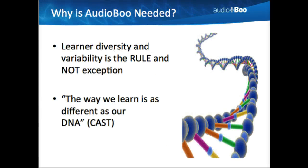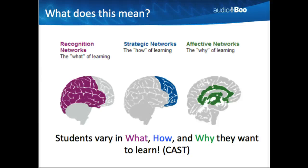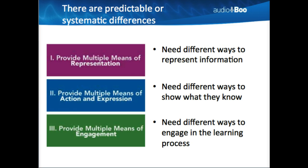So why exactly is Audioboo needed? Learner diversity in the 21st century is the rule, not the exception — also known as learner variability. The way we learn is as different as our DNA or fingerprint. Students vary in what, how, and what they want to learn. There are three different brain networks: the recognition, the strategic, and the affective, all working together to create an authentic, customized learning experience. CAST, or the Center for Applied Special Technology, has developed universal design for learning principles that say there are systematic and predictable differences in learners.